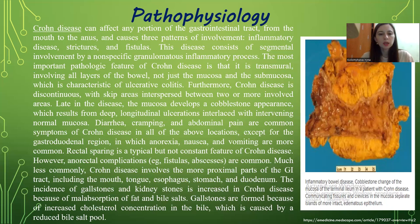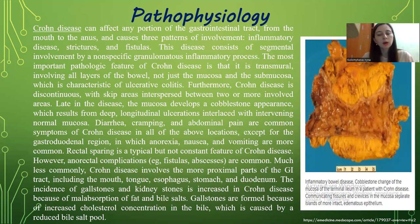Diarrhea, cramping and abdominal pain are common symptoms of Crohn's disease in all locations, except for the gastroduodenal region in which anorexia, nausea and vomiting are more common. Rectal sparing is typical but not constant; however, anorectal complications are common. Much less commonly, Crohn's disease involves the mouth, tongue, esophagus, stomach, and duodenum. The incidence of gallstones and kidney stones increases in Crohn's disease because of malabsorption of fat and bile salts. Gallstones are found because of increased cholesterol concentration in the bile caused by a reduced bile salt pool.